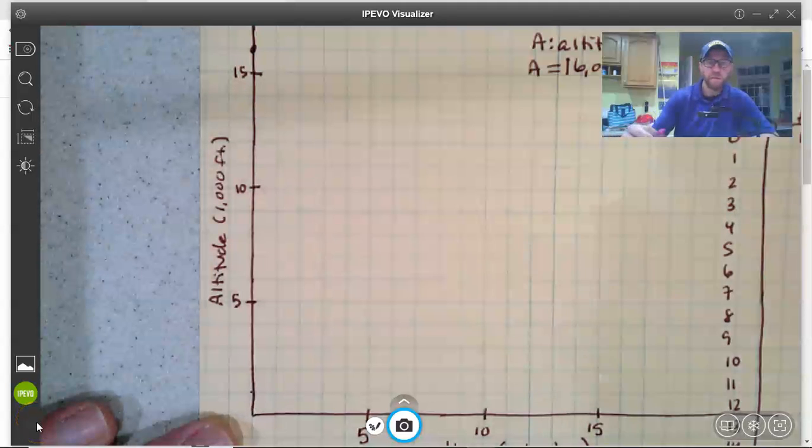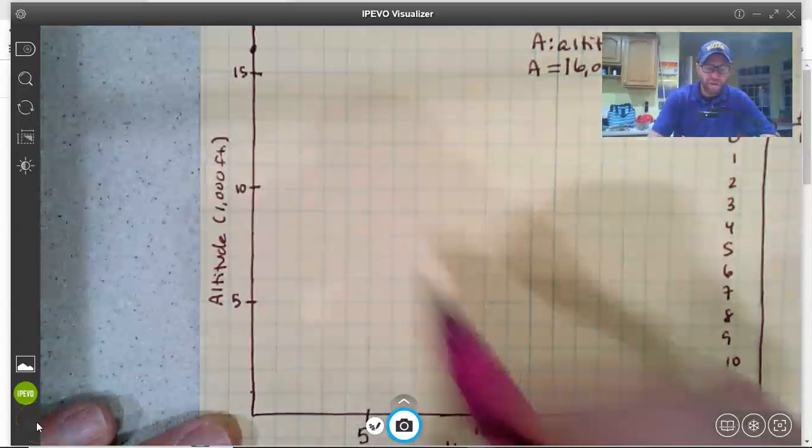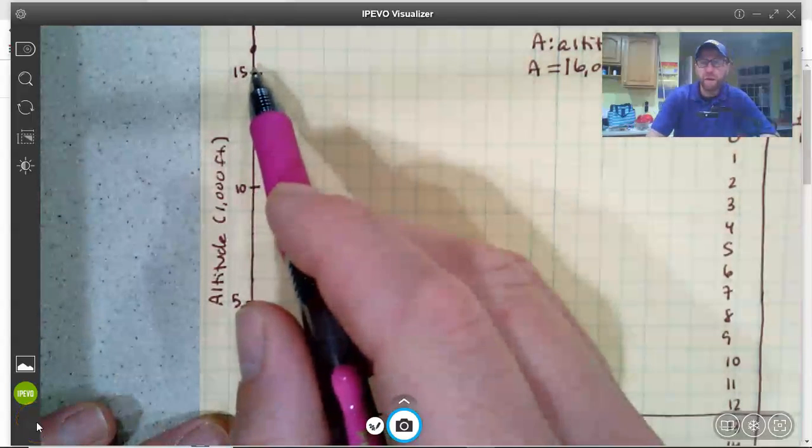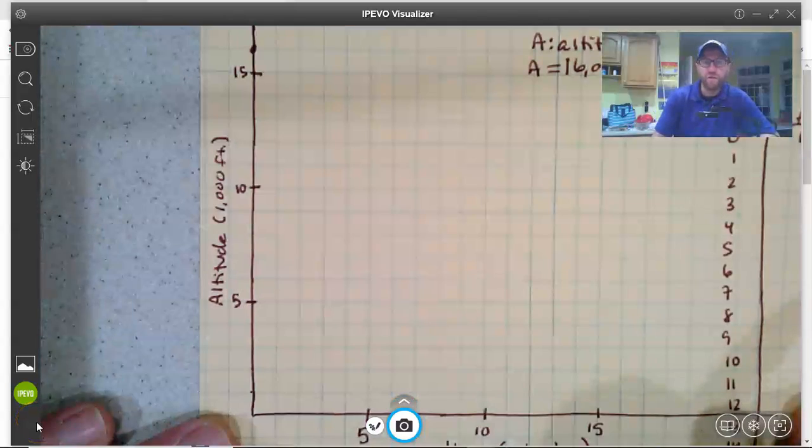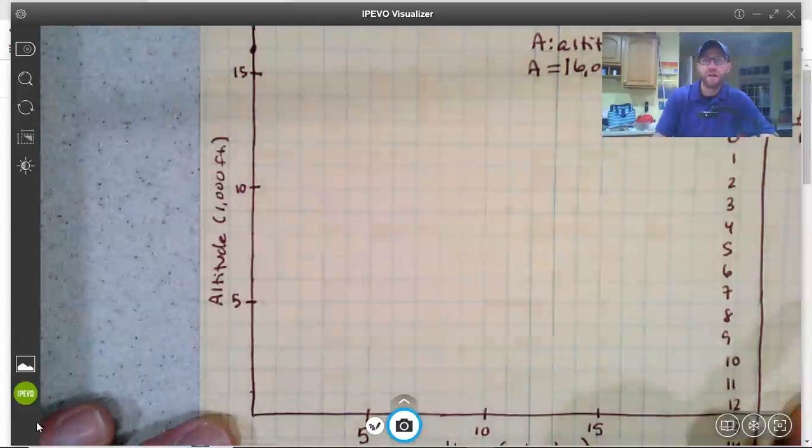In this problem, taking a look at an airplane that is 16,000 feet above the ground and descending at a rate of 1,200 feet per minute, the question is how long will it take before it reaches the ground?